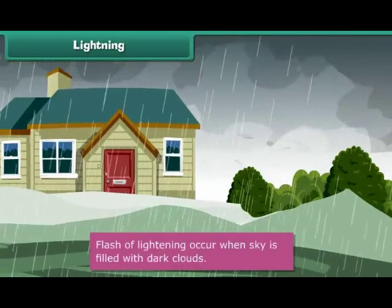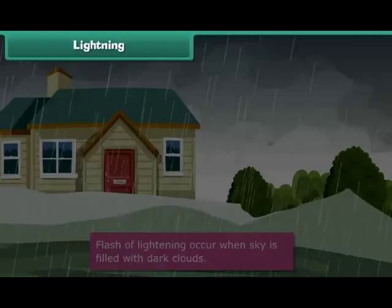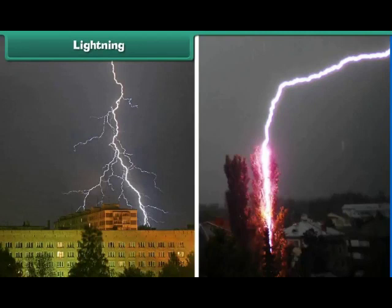Lightning. Students, lightning is also a natural disaster. During the rainy season, when the sky is filled with dark clouds, we see a flash of lightning in the sky. The lightning may strike buildings, trees, or a field. When lightning strikes, everything at that place burns. Sometimes animals and even people die due to lightning.